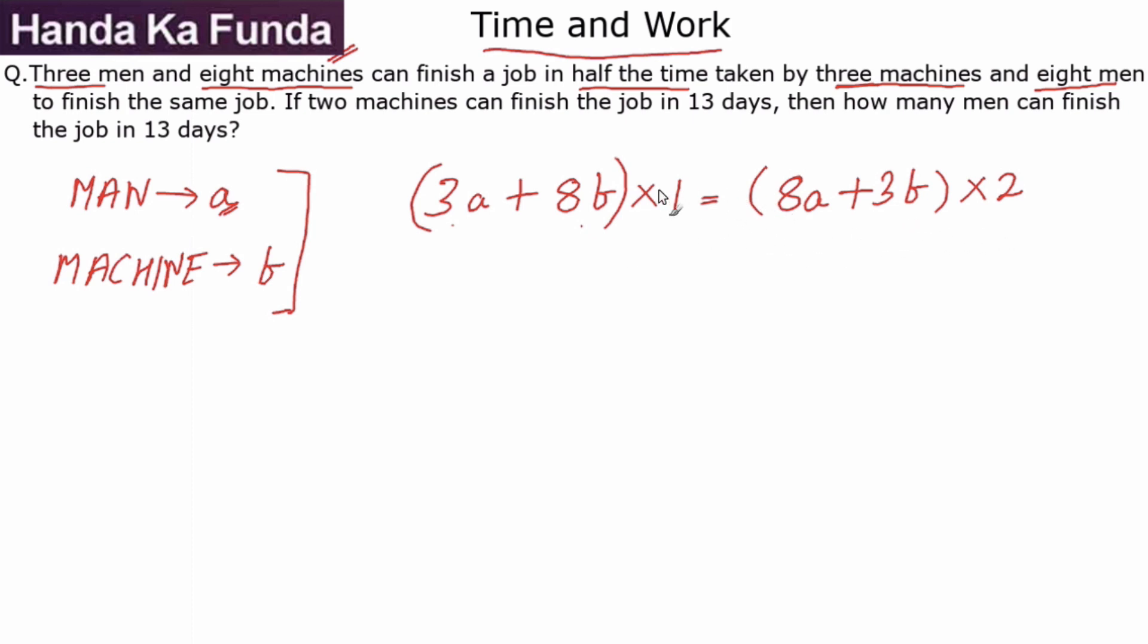So once you have this particular equation with you, all you need to do is figure out the relative efficiencies of man and machine, or essentially figure out a relationship in the work done by a man and a machine in one day. Let's try and solve this. So what will I get? Let me bring the a's to one side and b's to one side. So I have 8b here.